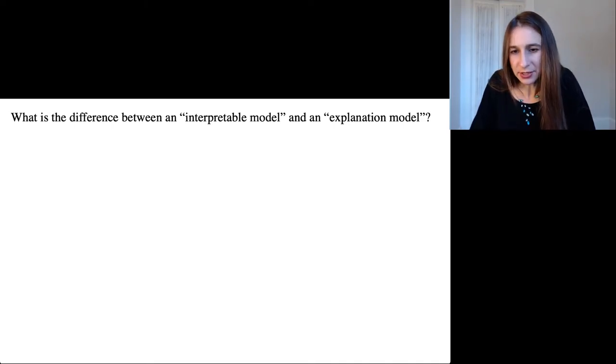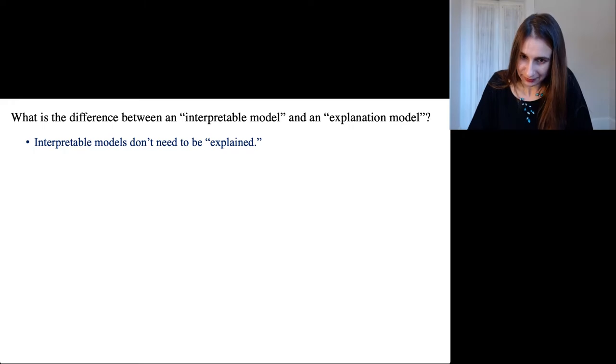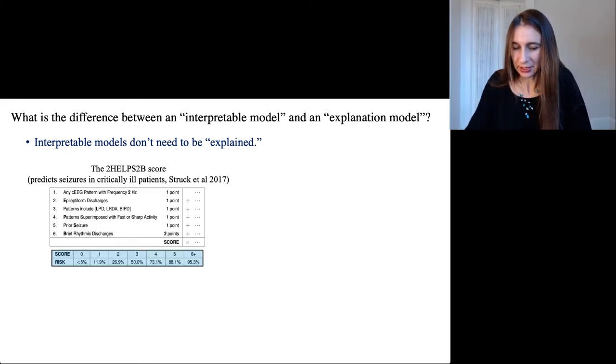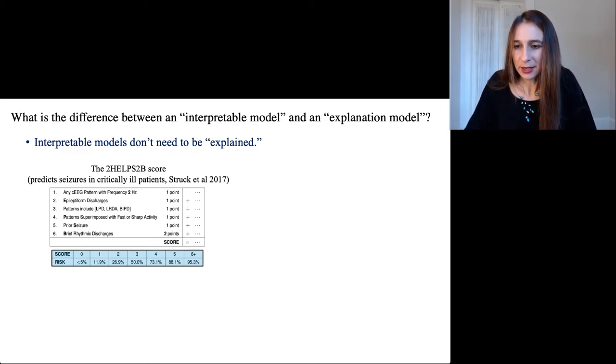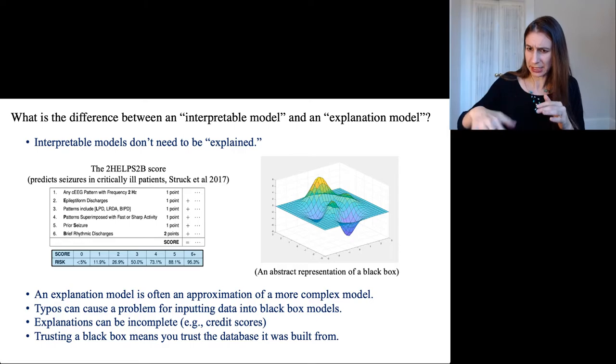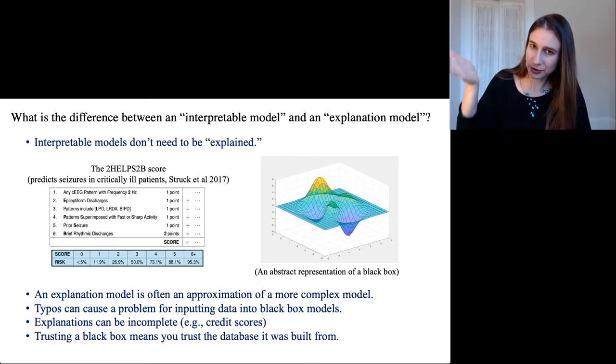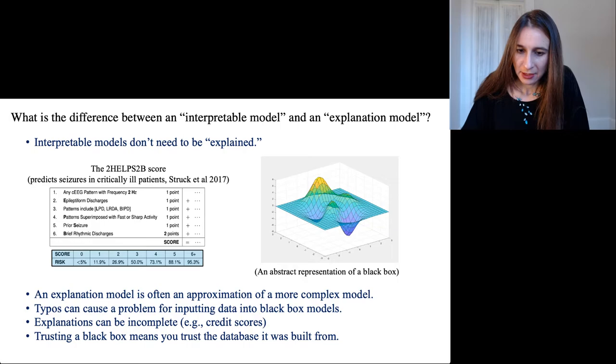What is the difference between an interpretable model and an explanation model? Well, interpretable models don't need to be explained, like the 2-HELPS2B score, which naturally comes with its own explanations. But an explanation model is usually really for a black box. It's usually where you take a black box, some kind of complicated function, and then you try to do linear approximations of it, or compute derivatives of it, or understand it in other ways.